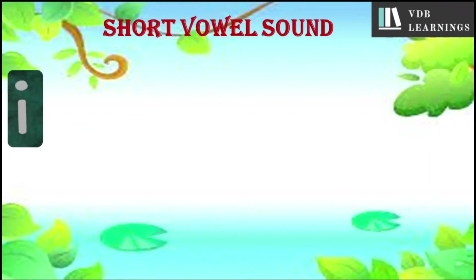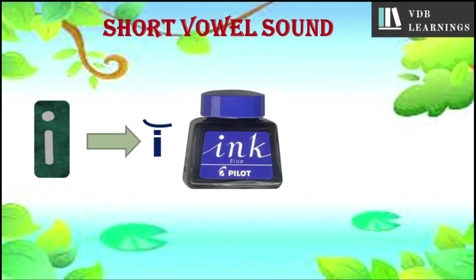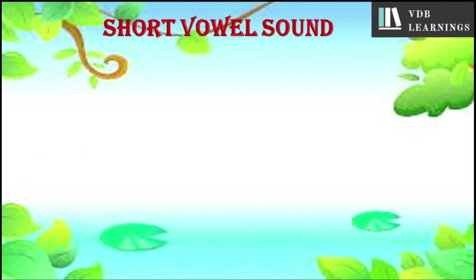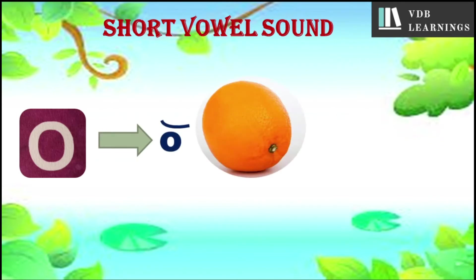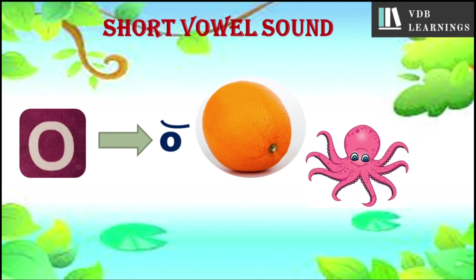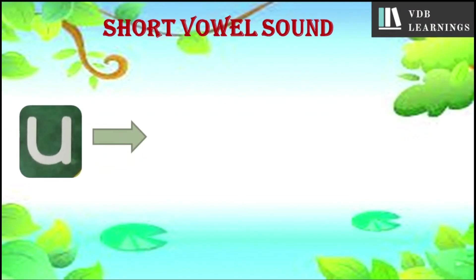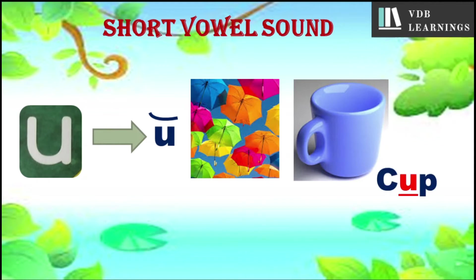Short vowel I — the sound is 'i'. Examples: ink, igloo. Short vowel O — the sound is 'o'. Examples: orange, octopus. Short vowel U — the sound is 'u'. Examples: umbrella, cup.